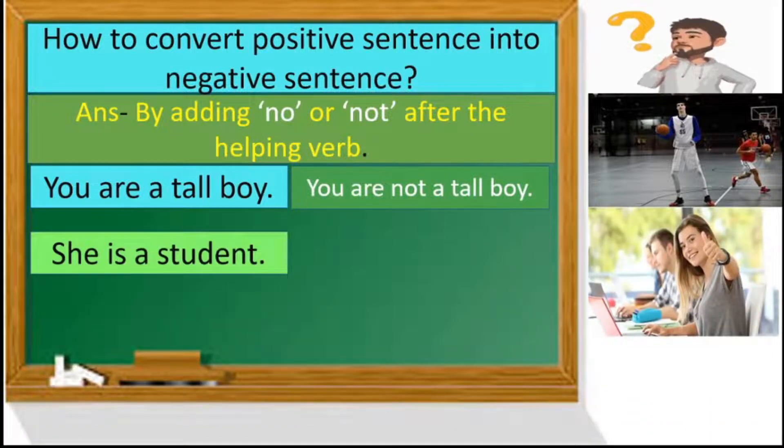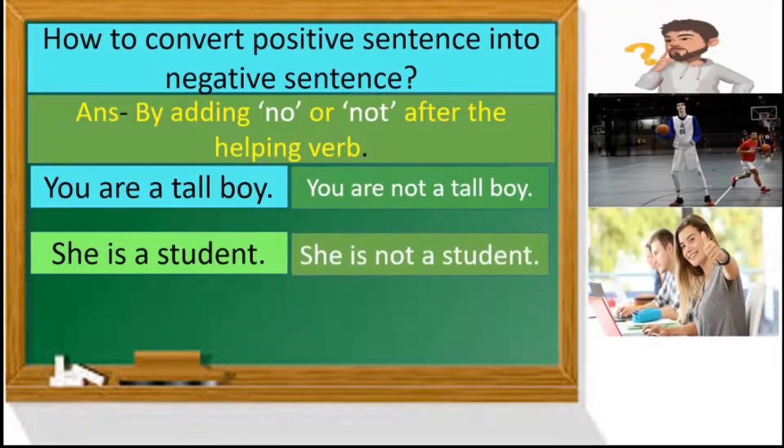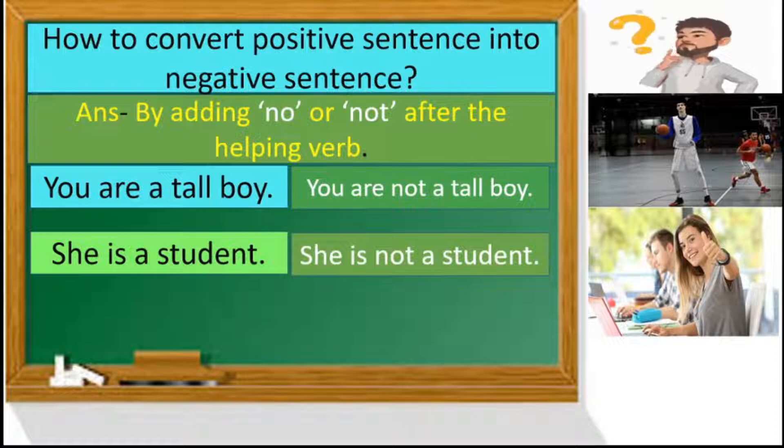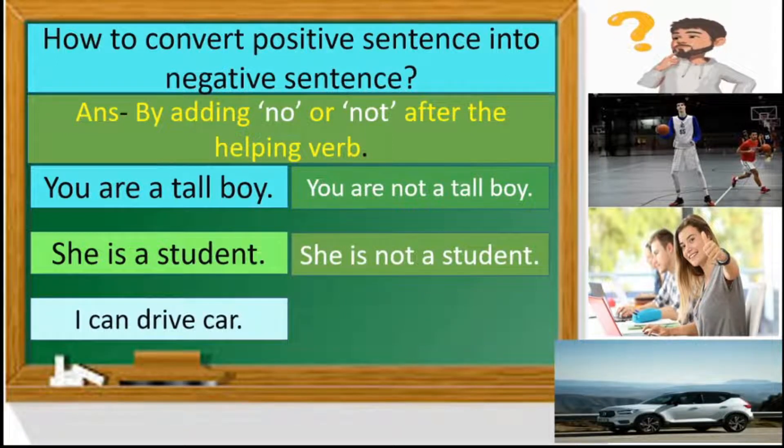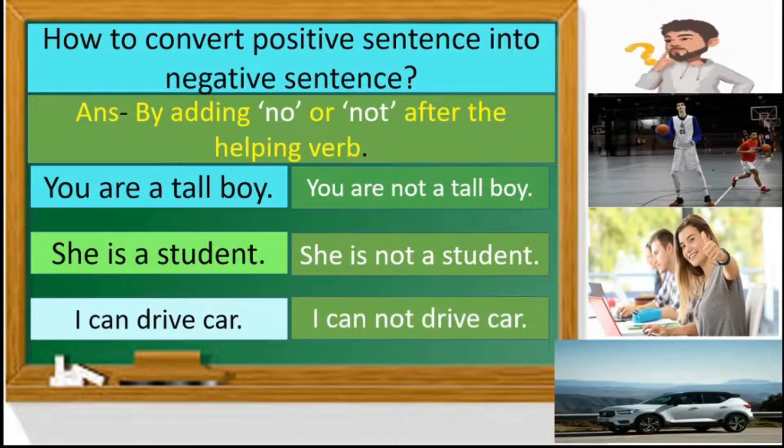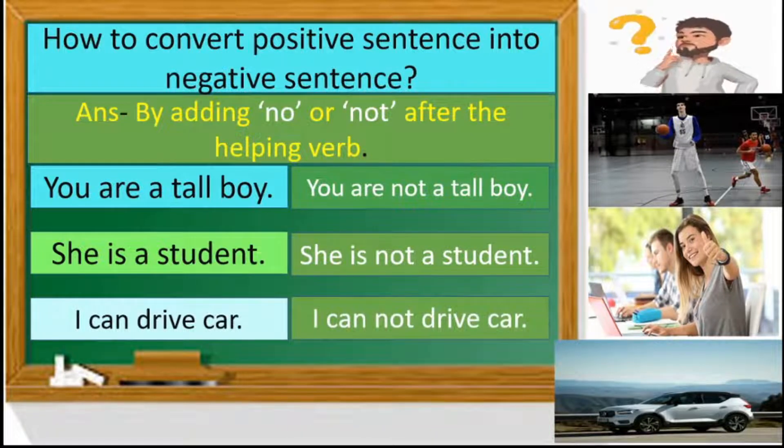Second example, she is a student. She is not a student. Next, I can drive car. I cannot drive car. So you can see, we can use not to make negative sentences.